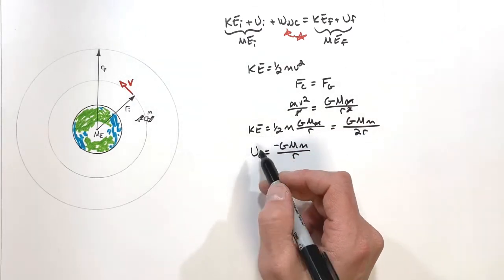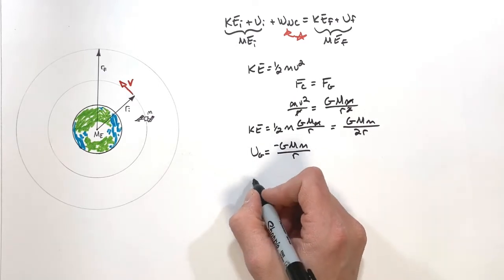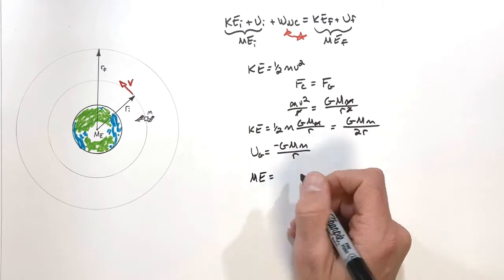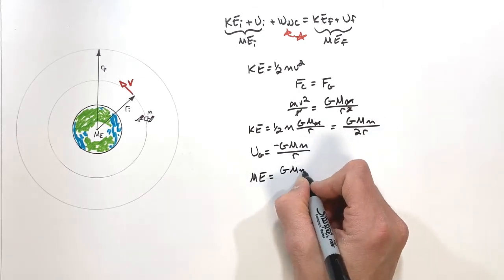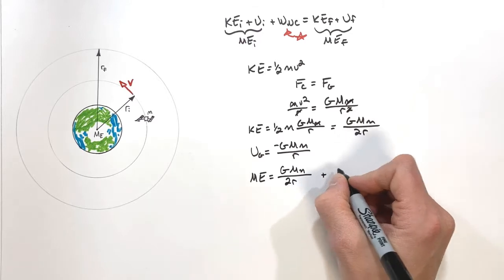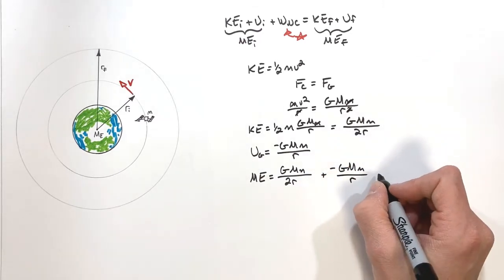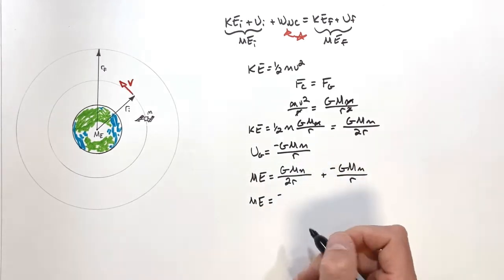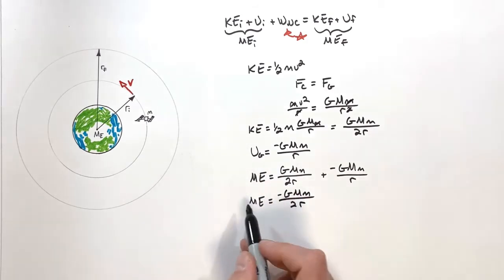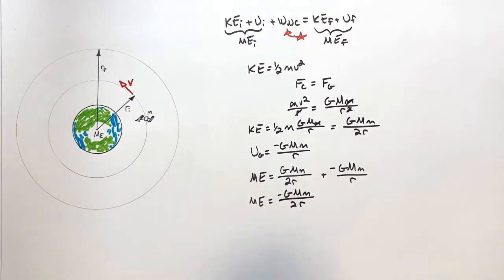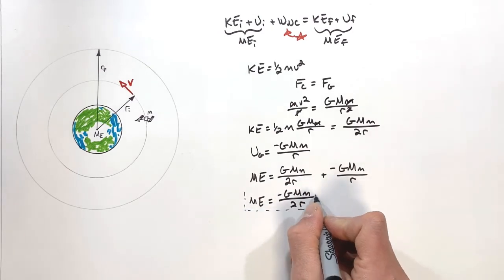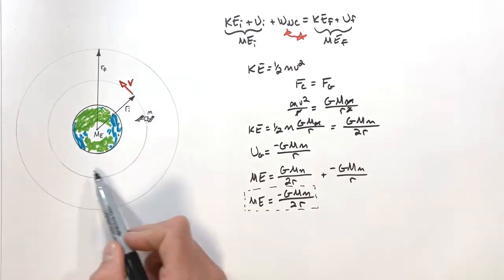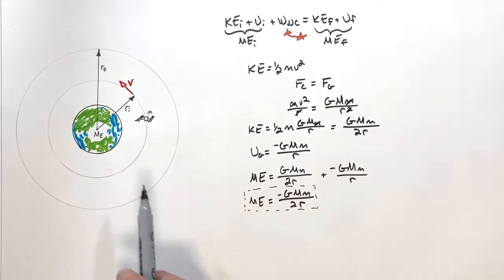Mechanical energy is simply kinetic plus potential energy, so adding these two terms together gives a function for mechanical energy. Combining GMm/2r and negative GMm/r, we get the mechanical energy of a satellite in circular orbit. This is not the final answer to the problem — we're solving for work — but this is a key intermediate result.